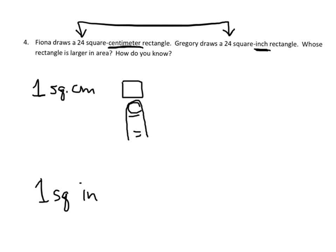A square centimeter has one centimeter and one centimeter on each side, whereas a square inch is one inch and one inch on each side. So even though both Fiona and Gregory use 24 squares, Gregory's rectangle is going to be larger because it's using the larger inches instead of the smaller centimeters.